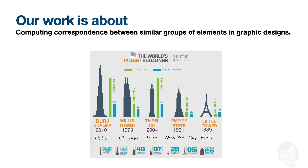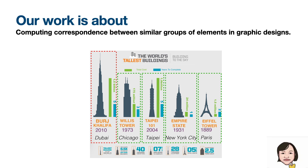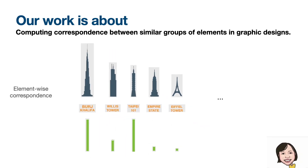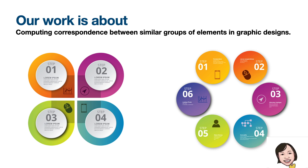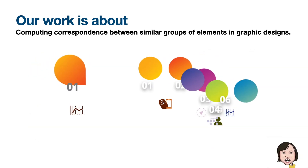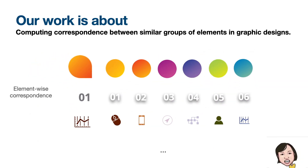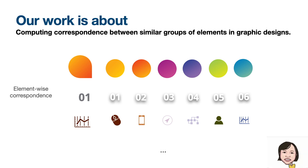Our work is about computing correspondence between similar groups of elements in graphic designs. For example, in this design there are repetitions of similar elements for each building, with different elements corresponding to each other. Sometimes we also see similar elements across multiple designs. Our work is about computing a robust element-wise correspondence within and across vector graphics designs.